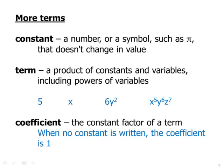Because of course, x equals 1 times x. We wouldn't write the 1. That would be kind of redundant. But the point is, x has a coefficient of 1. And in fact, that last one, x to the 5th, y to the 6th, z to the 7th, that last term also has a coefficient of 1.